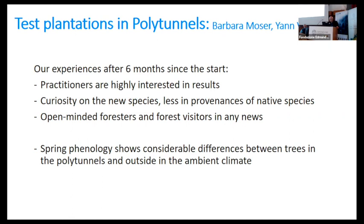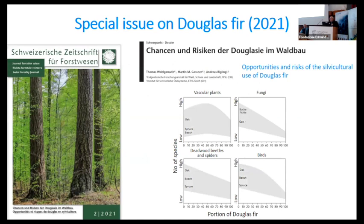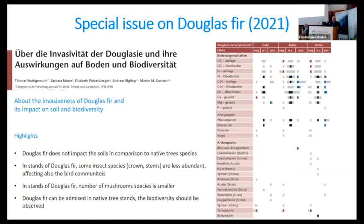In addition to these practical research aspects, we have produced a special issue on Douglas fir in the last year, summarizing our results with advice on how to plant Douglas fir — not in pure stands, but mixed into existing stands to increase biodiversity of tree species — and how this affects birds, insects, and fungi. There is also a review in which all possible papers were screened for the effects and impacts of Douglas fir on soil and biodiversity. The result is available to read, though it is in German.